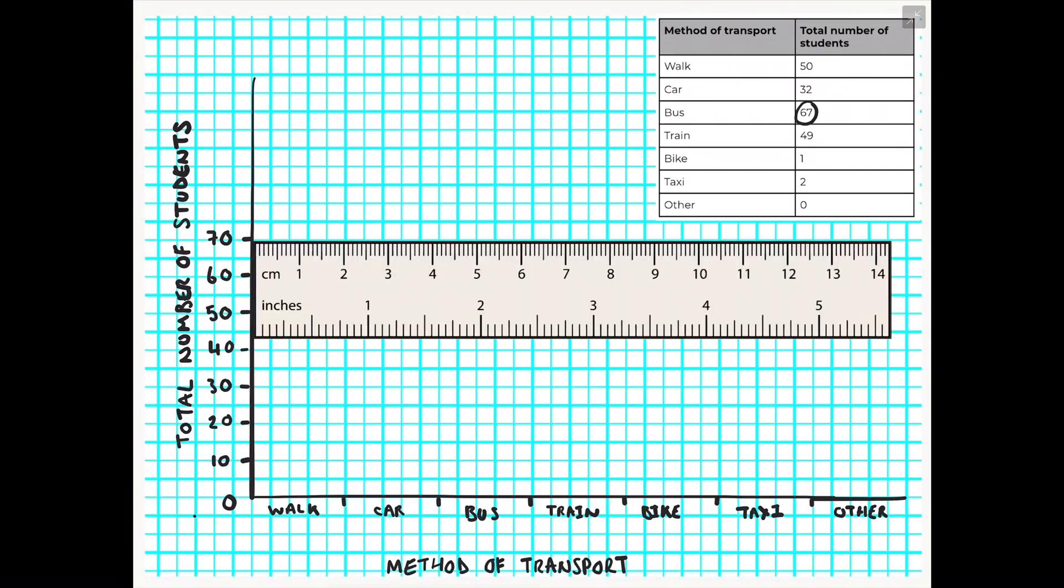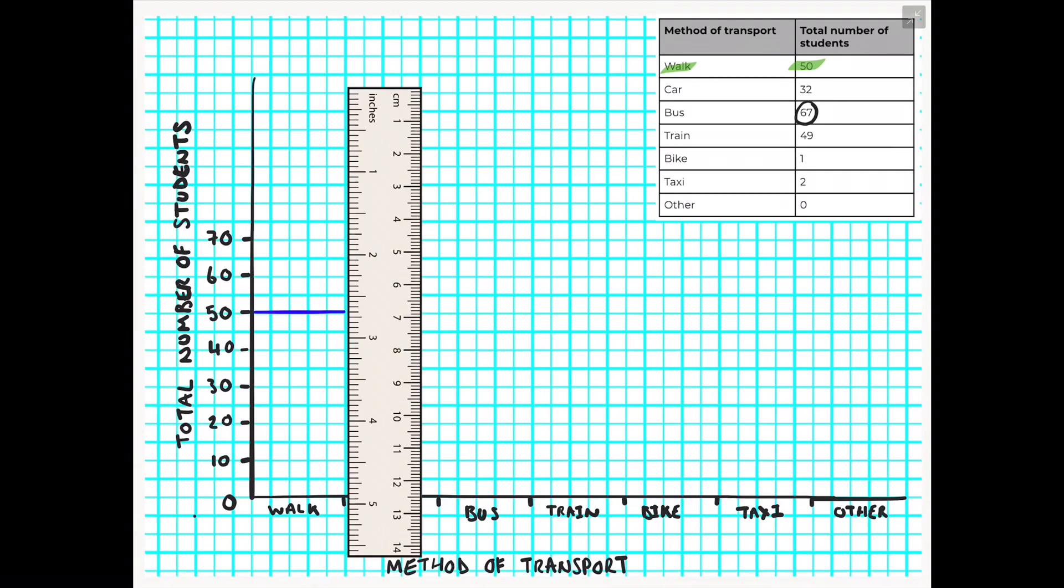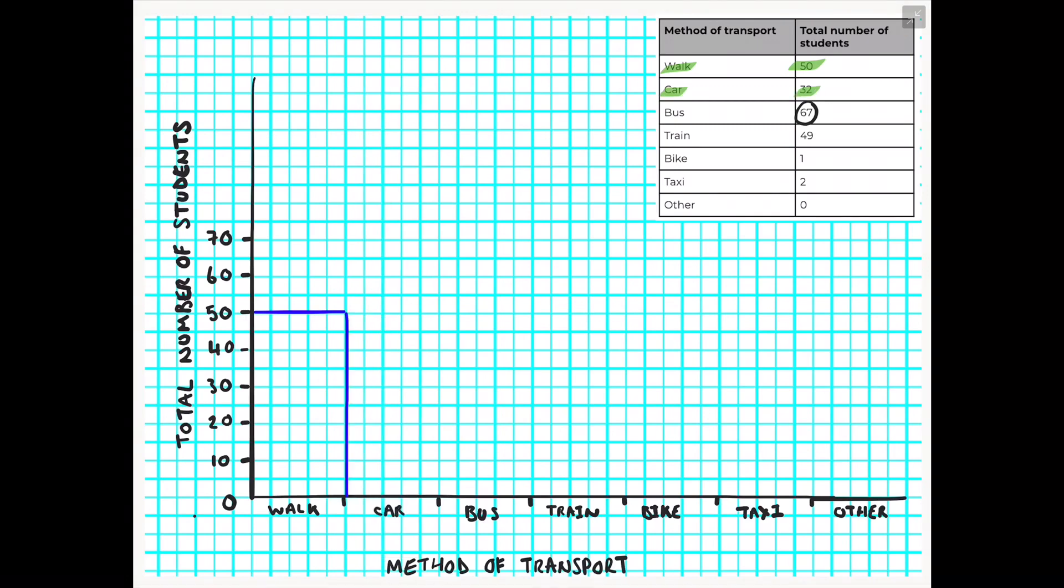I always recommend when we're drawing graphs to use a ruler, and then we'll start by looking at our table. We're going to start off with plotting the method walk first. I always move my ruler in line with the y-axis, and as indicated on the screen now you can see that it is in line with that 50 number of students. Then I will take my ruler and draw with a pencil the top of my bar and then down the side, again using the ruler, so I've got a nice wide bar which is clear and easy to read.